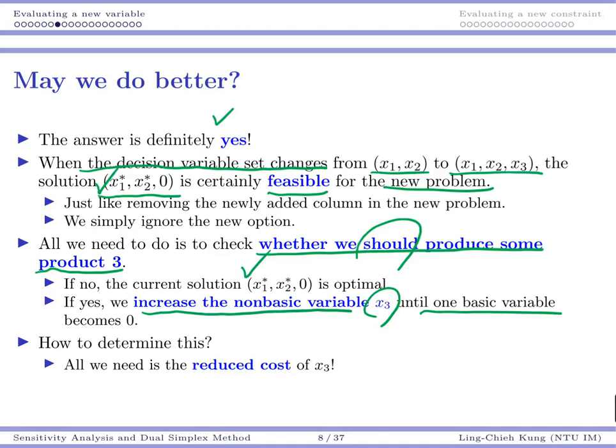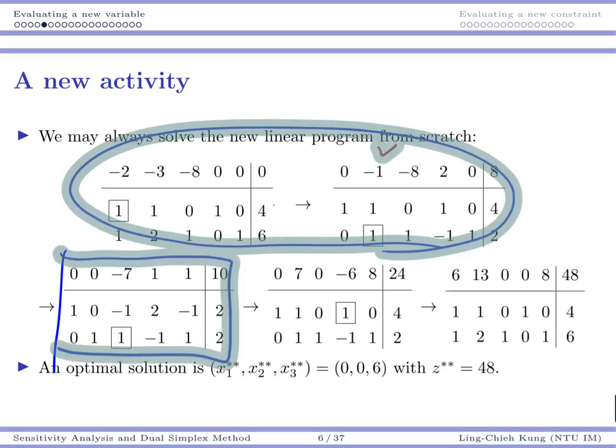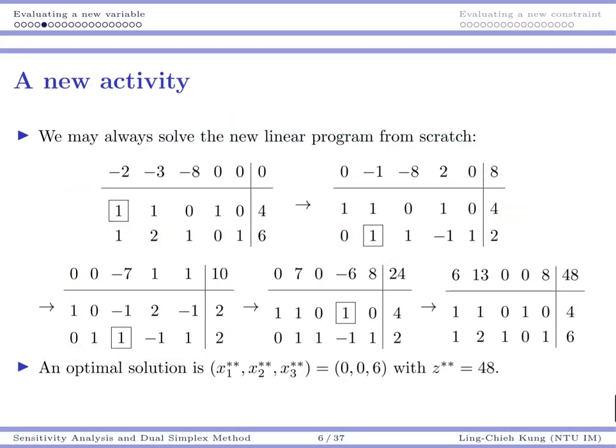That's something very typical in simplex method. All we need to do is to check the reduced cost for x3, and then we will be able to decide whether we should do this or that. If you look back to the iterations here, basically if we start from here, all we need to do is to check the reduced cost for x3. Because this is negative 7, that's why we add everything afterwards.